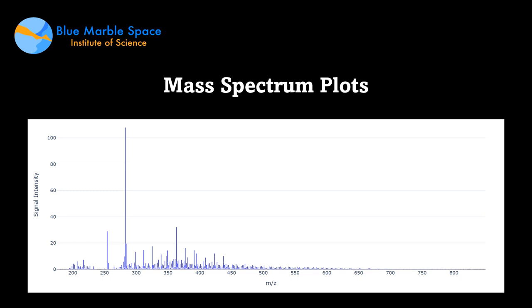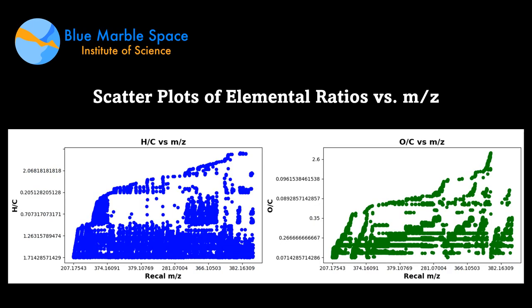This is just a random sample — one of many plots I picked to illustrate the kind of data we visualized. There were a lot of plots like this one, just for one sample. Another type of plot we worked on were the scatter plots of elemental ratios.